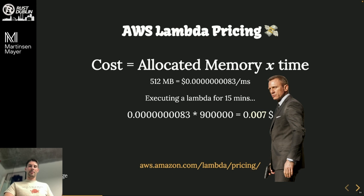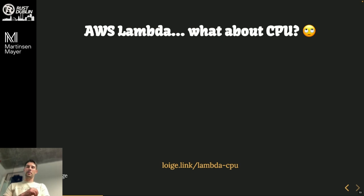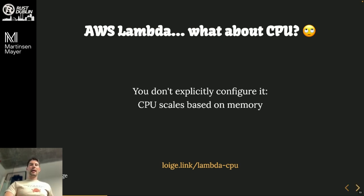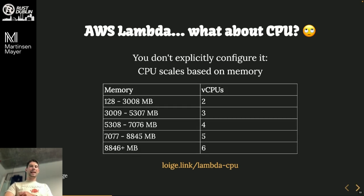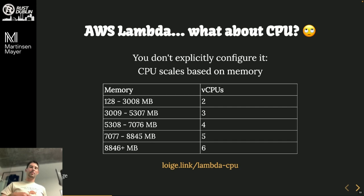What about CPU? You don't explicitly configure CPU in Lambda. Instead, you get more virtual CPUs the more memory you allocate. Someone ran benchmarks showing the relationship between memory and vCPUs — it's not an official AWS table but it's a useful reference. If you need more CPUs, you allocate more memory, which means you end up paying more.